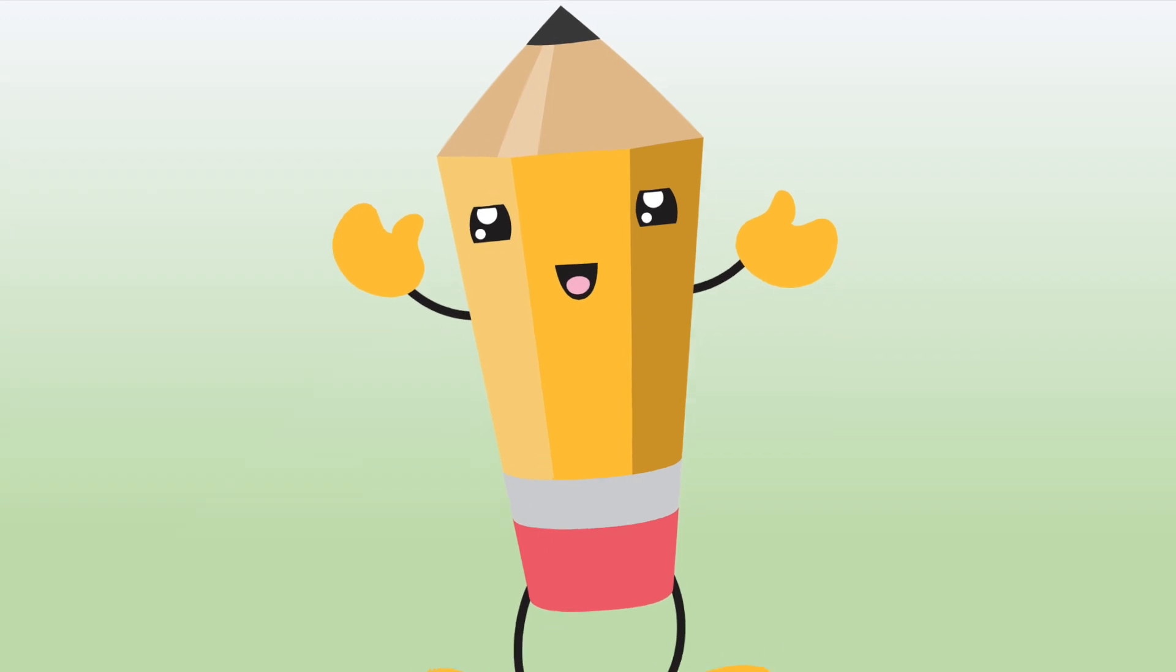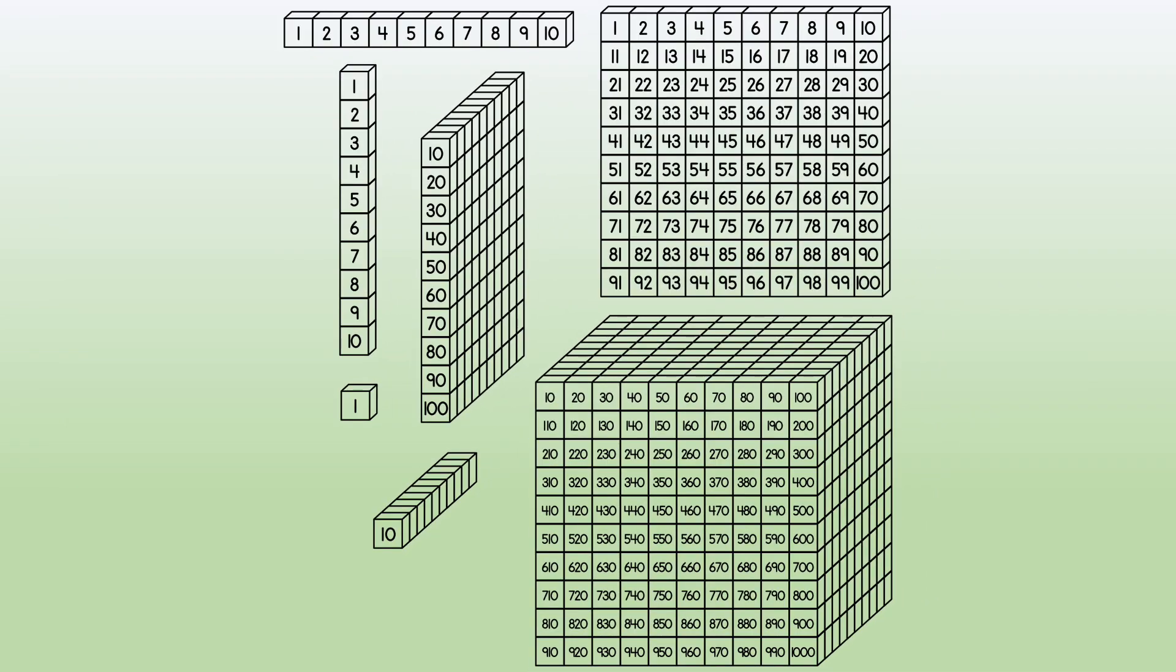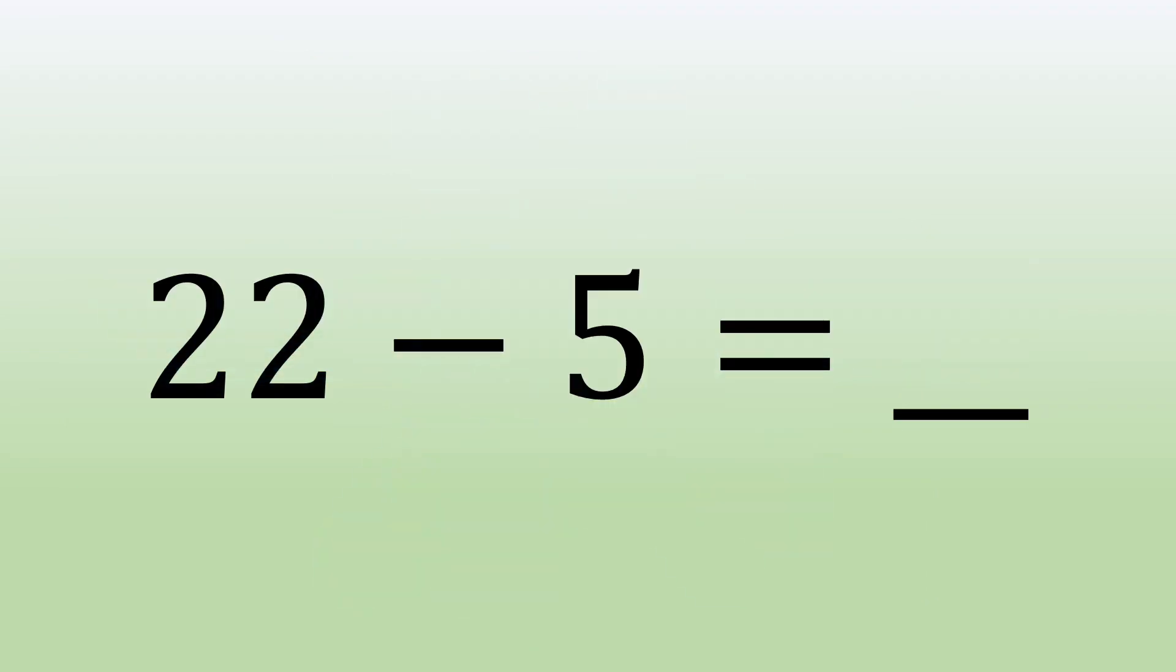You did a great job listening. Another way to look at regrouping is to use base 10 blocks. Let's use a different number sentence: 22 minus 5 equals blank.